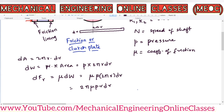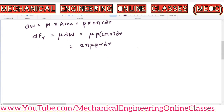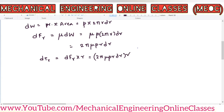Similarly, dTR is the frictional torque acting on the ring. It will be equal to radius into frictional force: dTR = 2π mu P r dr × r = 2π mu P r² dr.